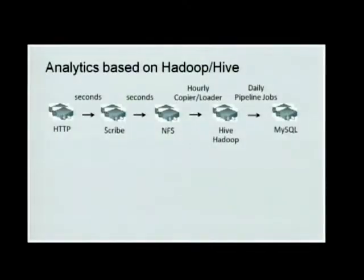We already had an analytics solution on top of Hadoop and Hive about one or two years ago. The basic flow of the data is like this: we start from the left side — HTTP web servers, which generate a huge amount of data and send it to a set of boxes running the Scribe daemon. Scribe is a log collection framework. After that, the data gets written into network file systems — all those processes are in seconds. Then we have hourly loaders and copiers which get the data into Hadoop and Hive.